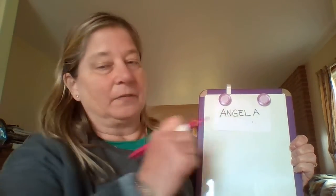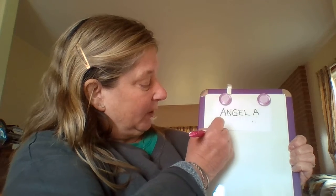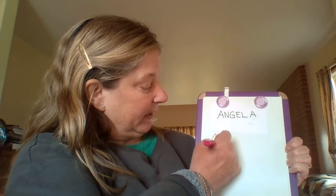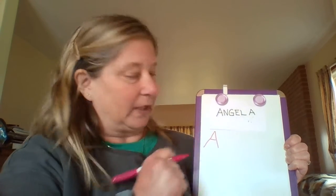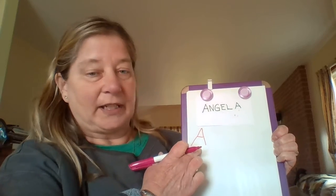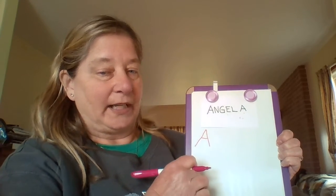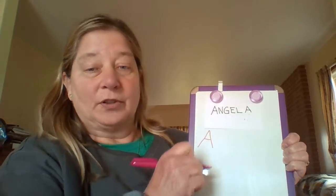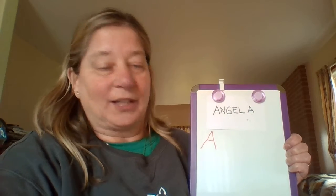Ready? We're gonna start with our first letter. My turn first. I'm gonna go slant line down, slant line down, slant line down, little line left to right. And I made an uppercase A for Angel. Now it's your turn — go ahead and do your slant line down, slant line down, little line left to right. Great job guys.